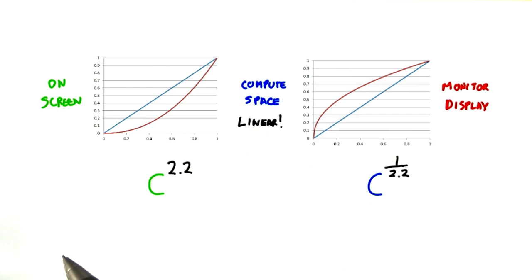To sum up, whatever we see on the screen is in this non-linear gamma space. To use it in lighting computations, we want to make the data linear, so we raise each channel's value to the 2.2 power. We perform our lighting calculations, then at the end we go back to the monitor space by raising to 1 over 2.2.